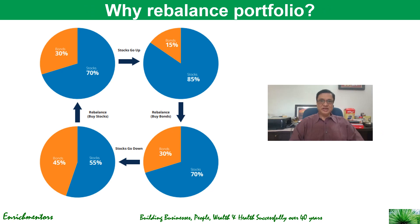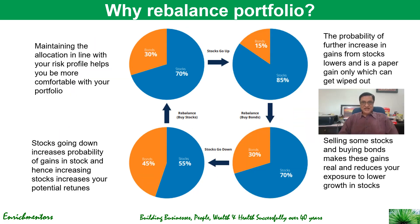Having understood what portfolio rebalancing is, the question is: why rebalance? Why not let it remain at 85/15 and let it naturally come back to 70/30 at some point? Well, if your portfolio went up from 70/30 to 85/15 and you let it remain as is, the probability of further gains from stocks is lower, because already something has happened and markets are cyclical.